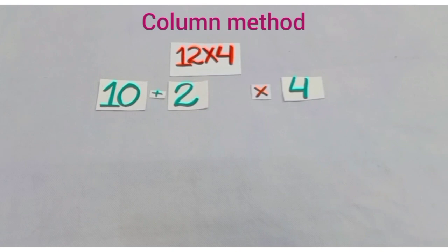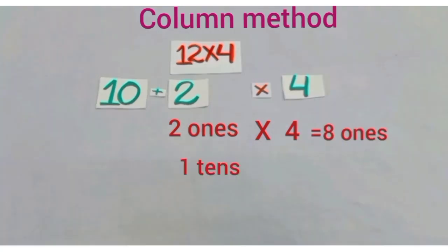Let's start multiplication with the column method. Students, here we have 12 into 4, and we have split 12 into 10 plus 2. Dear students, here we have 2 ones and we will multiply it by 4, and this is equal to 8 ones. Now, we have 10, and we call it 1 ten, and we will multiply it by 4, which is equal to 4 tens.